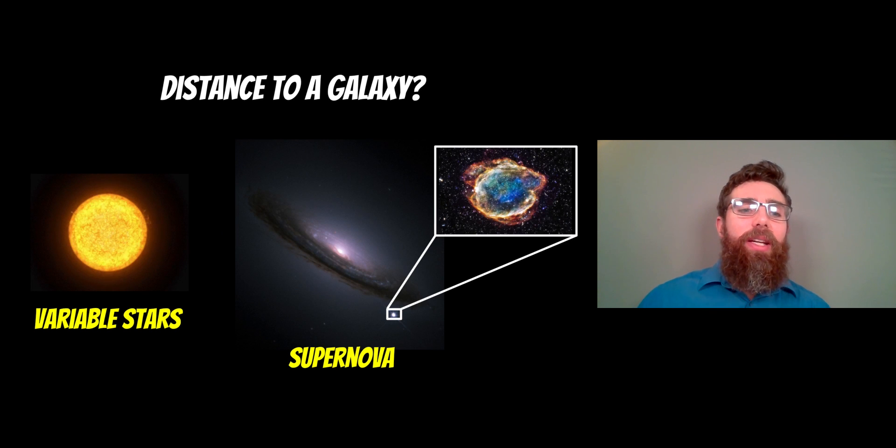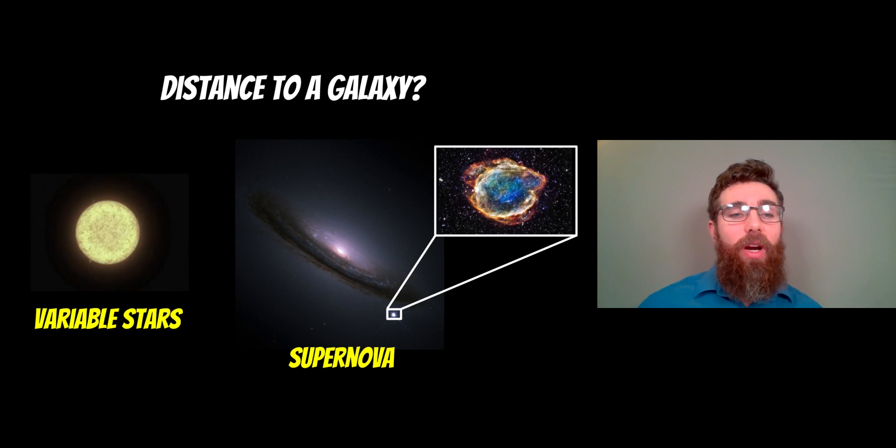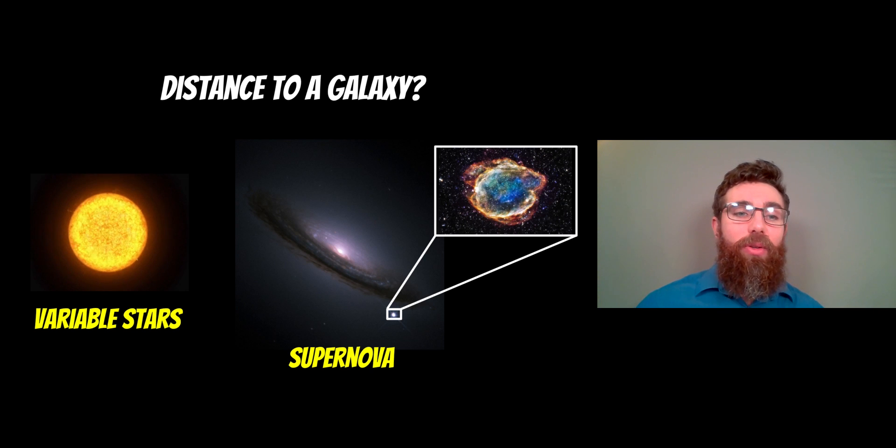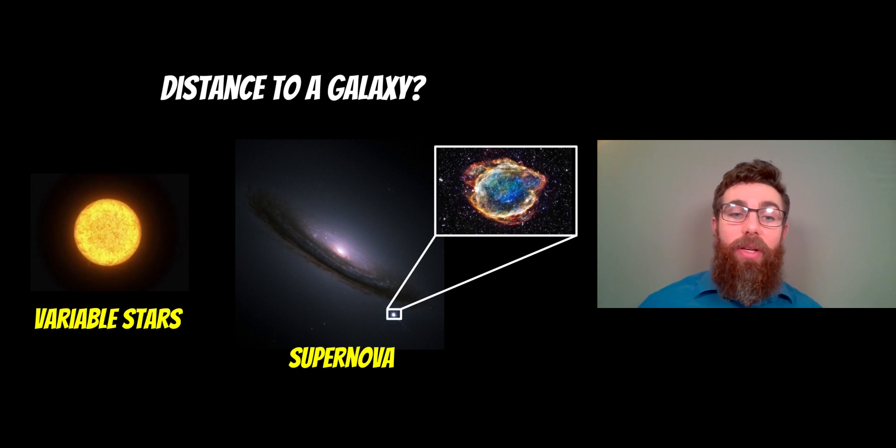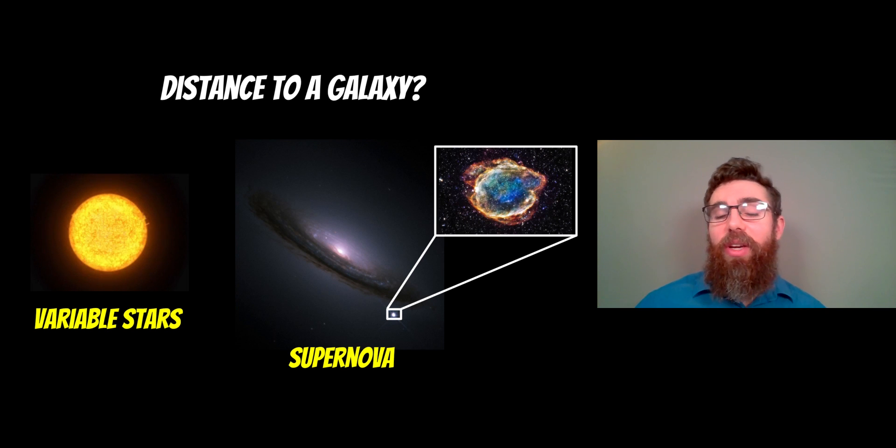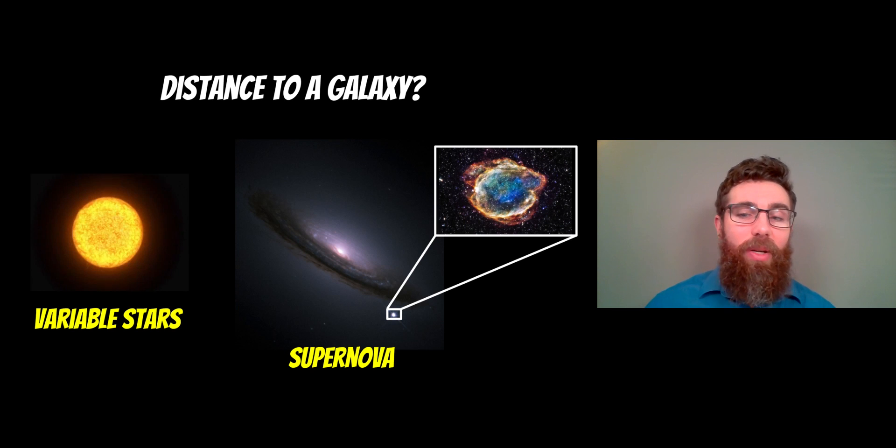If the galaxy is fairly nearby, you can use variable stars. The rate that they vary relates to how bright they are. So their absolute magnitude relates to their period. We can calculate a distance that way because we know how bright they should be. We take a measurement of them and we can work out the distance.